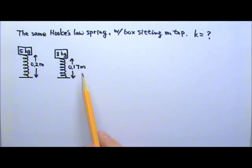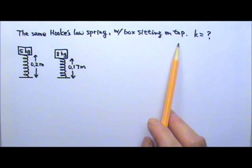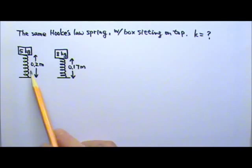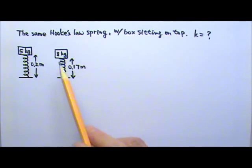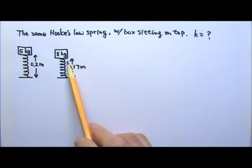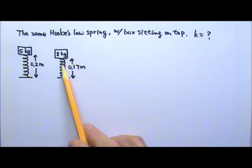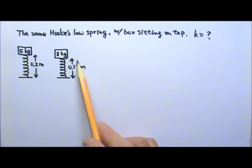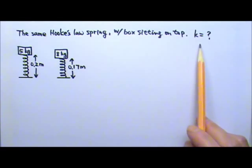This is the same Hooke's Law spring with a box sitting on top. In this picture, a 5kg box sits on top of the spring and the length of the spring is 0.2m. In this picture, it shows that when the box sitting on top is 8kg, the length of the spring is 0.17m. What is the spring constant k of the spring?